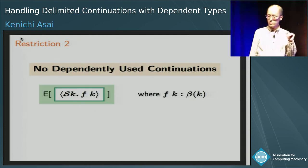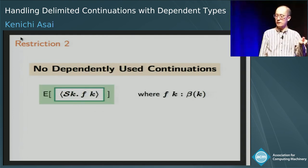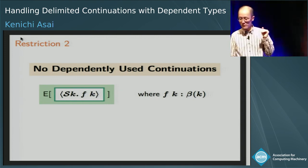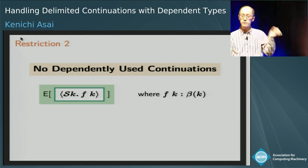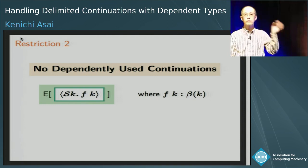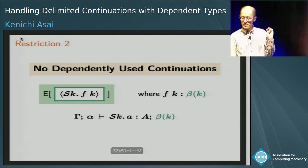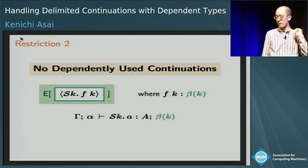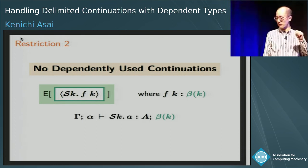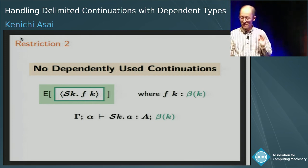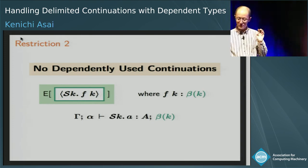The second restriction is that we cannot use continuations in a dependent manner. We could use continuations dependently by passing the captured continuation K to a dependent function S. In this case, writing the typing judgment shows that the final answer type depends on K, which resides outside its scope. K is meaningful only in the body A of shift, but K appears outside it, so we cannot allow this kind of dependency.